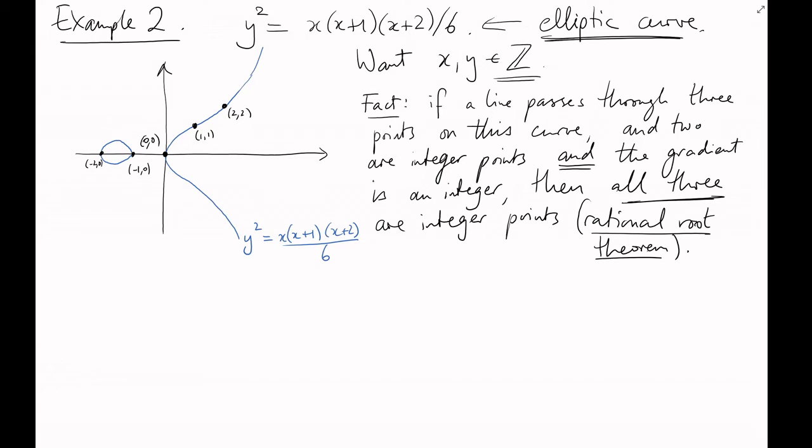Now, how can we find a line of integer gradient? Well, this curve is symmetric in the x-axis. So, in fact, we know that the reflections of these points also lie on this curve. So, that gives us two more points to play with. Now, if we pick, say, 1, minus 1, and 2, 2, we get a line of gradient 3. This line through these points is y equals 3x minus 4.